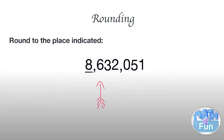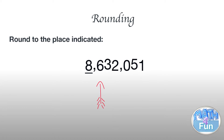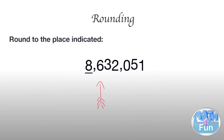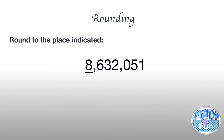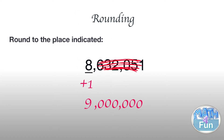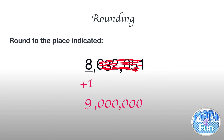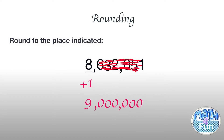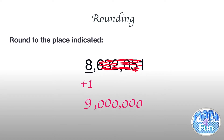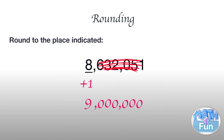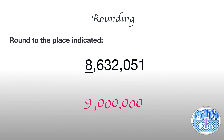Let me show you. The digit to the right of the underlined digit is 6. Is 6 five or more? Yes, it is more than 5. So we add 1 to the 8 and put all the other digits to the right as zeros. The number becomes 9,000,000 — which is 9 million.